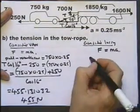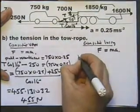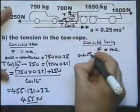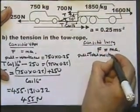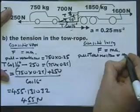So, our force is pull minus total resistance. Let's write it like that. Equals mass times acceleration.